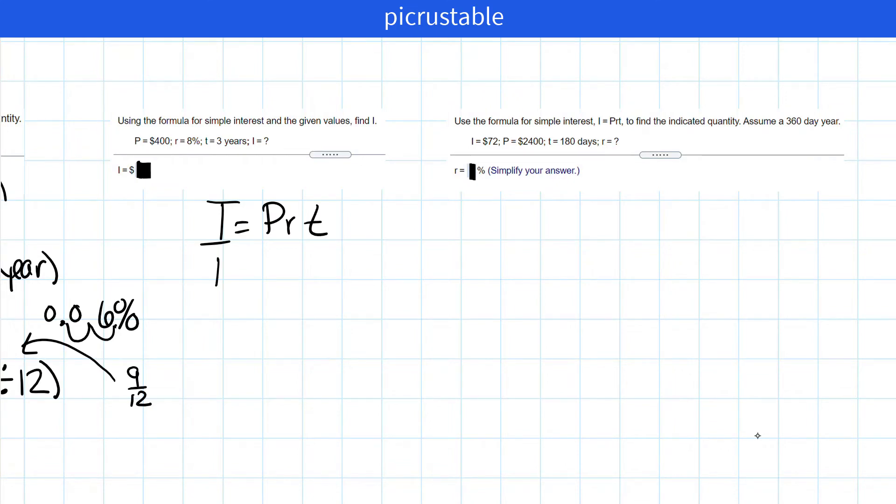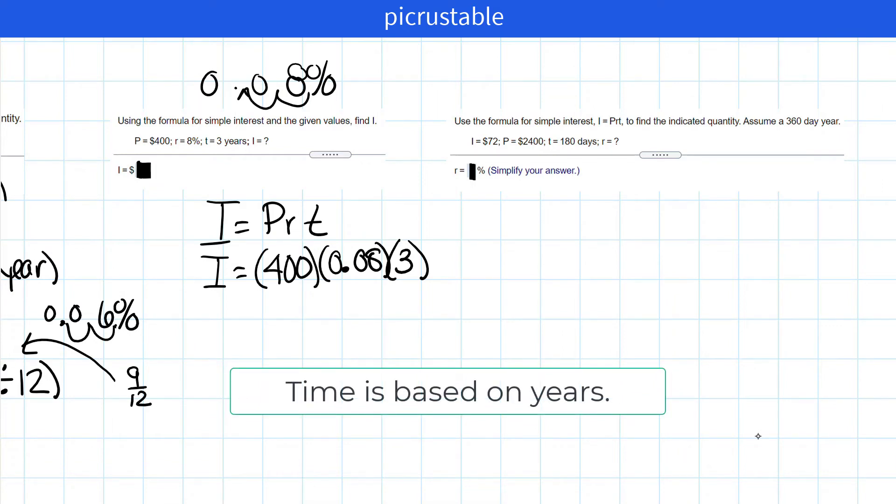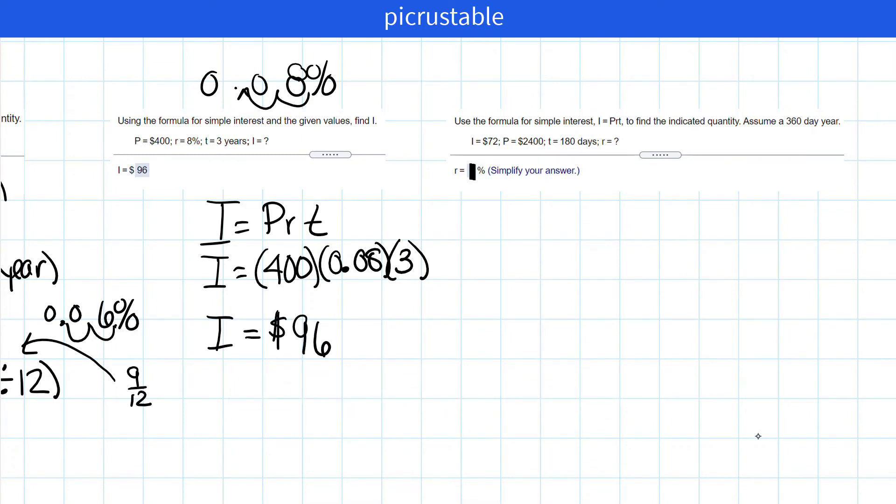We don't know I, so we're going to leave that alone. The principal is $400. The rate, now remember we have to change it to a decimal. So 8%. I'm going to move two places to the left. So it's going to be 0.08. And then it's 3 years. So we're just going to multiply by 3. Because remember, the time is based on 3. So let's multiply those. And it looks like our interest is going to be $96. Cool.